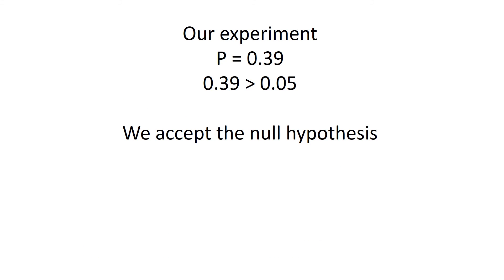In our hypothetical experiment, we got a p-value of 0.39. That means there's a 39% probability that the difference between the two averages is due to random chance. Since that's higher than 0.05, we're going to accept — technically fail to reject — the null hypothesis, because there's no significant difference in the two averages. Even though there's a slight difference, we say it's most likely caused by random chance, so the weight loss pill has no effect on weight loss.